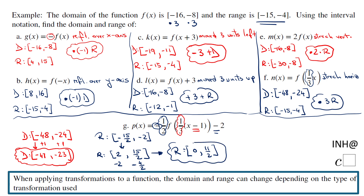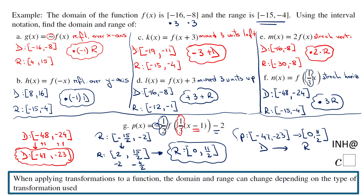So the final answer for part G: the domain is from negative 47 to negative 23, and the range is from 0 to 11/2. This example is really more of a mini-lesson about how the domain and range can change depending on the type of transformation. If you enjoyed this mini-lesson, don't forget to click the like button and come back at C-squared for more help. Thank you.